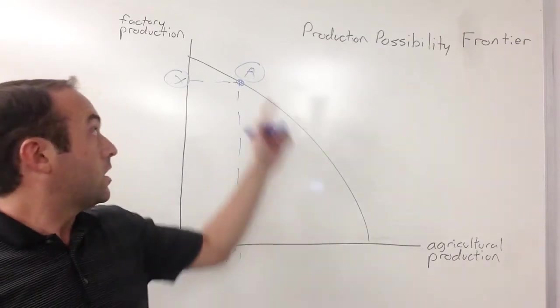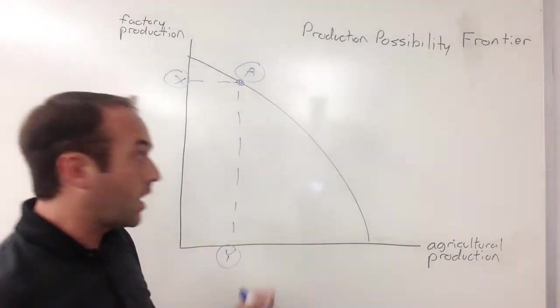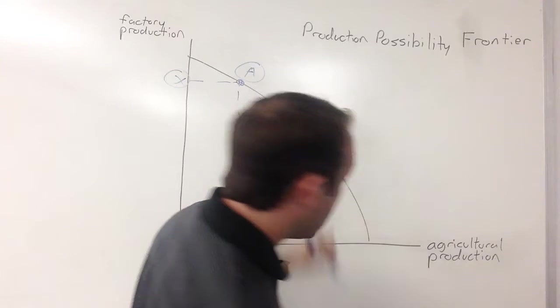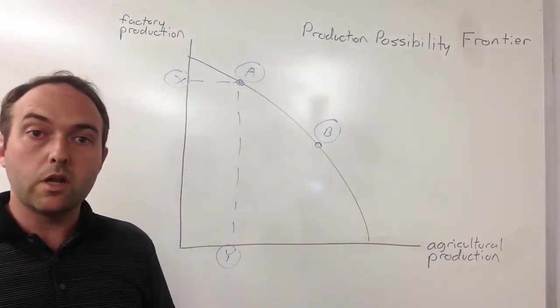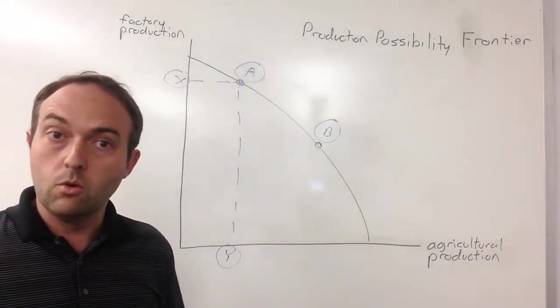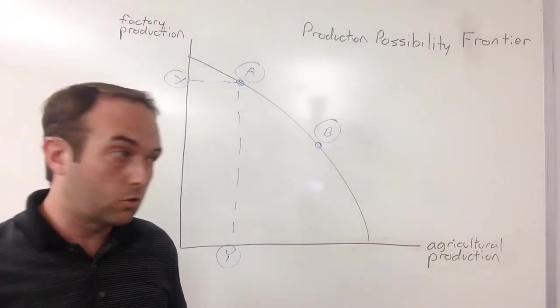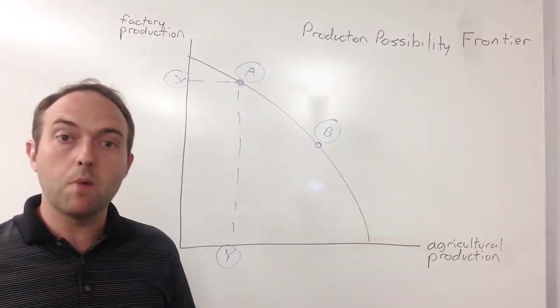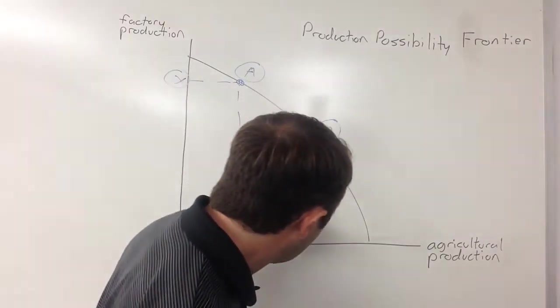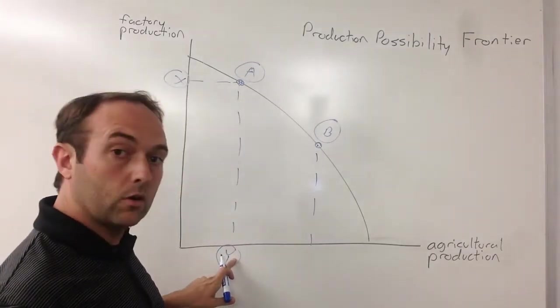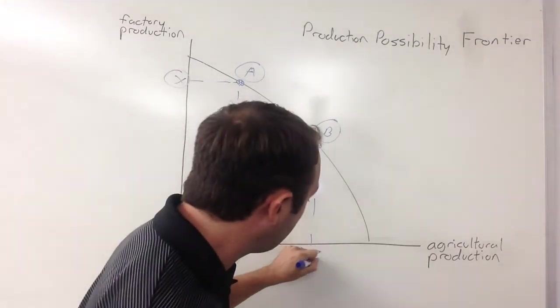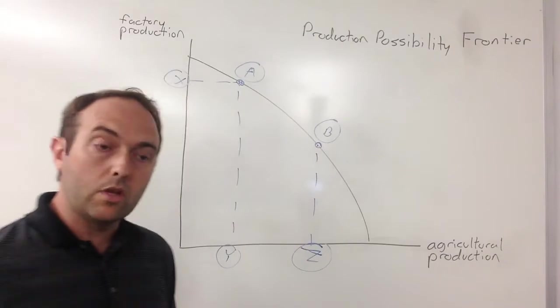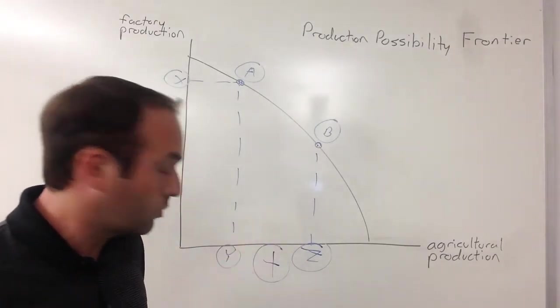For example, if instead of doing combination A, it chose to do combination B, that would show a huge gain in agricultural production. For a lot of reasons society might want to do this. It might want to go from Y agricultural production, let's call this over to Z. A big jump in agricultural production.